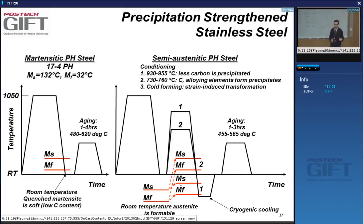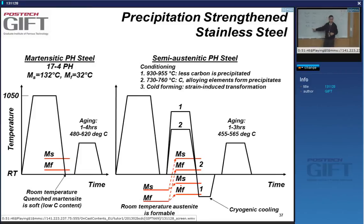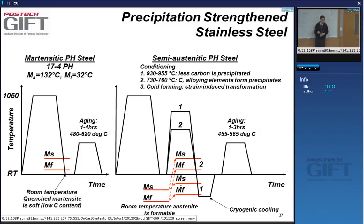In BCC alloys, precipitation hardening is not commonly used, but in martensitic steels we do use it — for example with FeAl precipitates that form in the matrix. You can also form Ni₃Mo by adding nickel and molybdenum, though those precipitate at grain boundaries. For high-temperature applications, you want particles in the matrix for precipitation hardening and particles in grain boundaries to prevent grain growth.